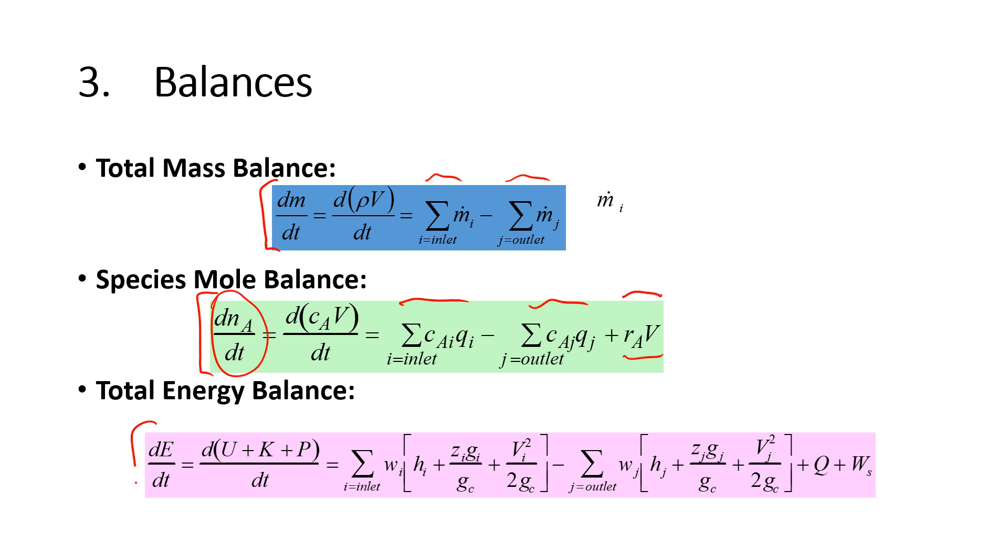Now energy balance is a little bit more challenging. You have the total energy with respect to time, and then you have the inlet streams, the outlet streams, you have heat put into the system, and then also work put into the system as well. This is the mass sub i, that's the mass flow rate of stream i coming into the system.